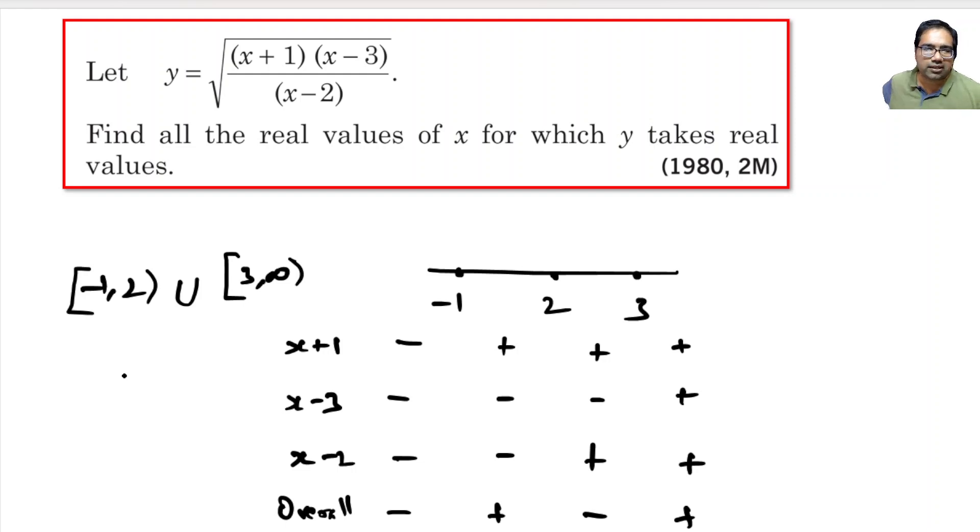Please note open bracket 2. 2 is open bracket because we cannot include 2. If x equals to 2, then denominator becomes 0. Right?